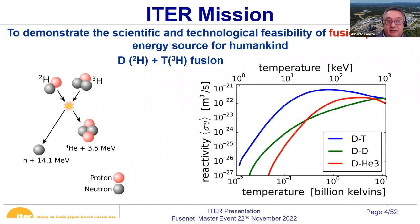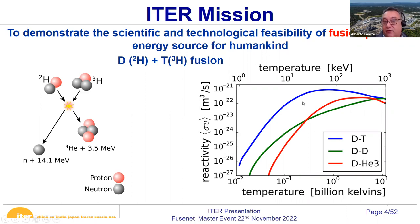ITER is an experiment — we are not going to produce electricity. If we were to produce electricity, the amount we would consume would be very similar to what we produce. What we have to demonstrate is that this is technically and technologically feasible. There are two objectives: it is not a pure scientific experiment, it is also a technology experiment at the same time.